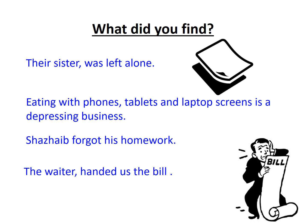So what did you find? 'Their sister, was left alone.' The subject is 'their sister' and the verb 'was left' is separated because of the comma. We know this is incorrect — we must never separate the subject from the verb. 'Their sister was left alone' should have no comma separating it. It is one sentence.